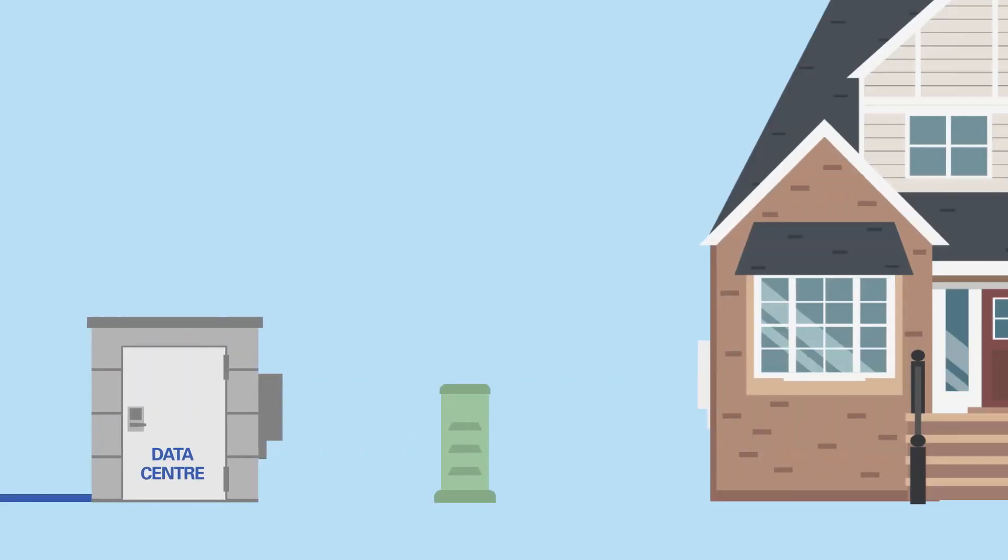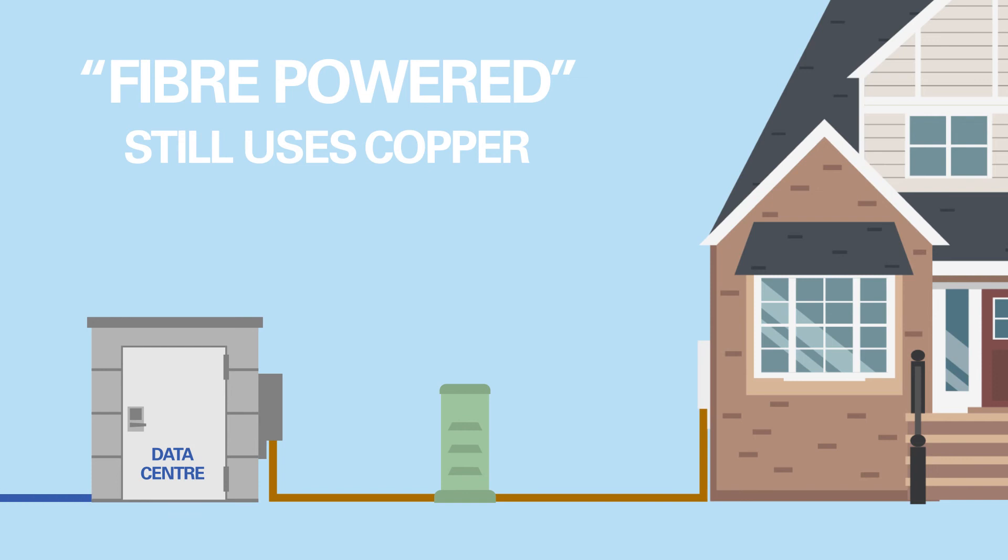Remember, sometimes providers use fiber in part of a network and use the term fiber-powered, but the connection to the house and the overall infrastructure still uses some copper. This helps a little, but ultimately the structure is a mix of fiber and copper, which results in two major problems still existing.